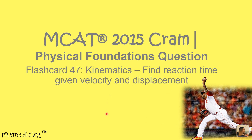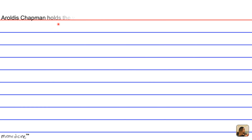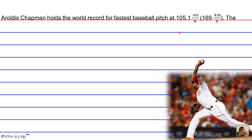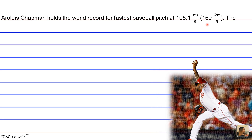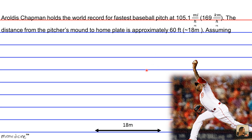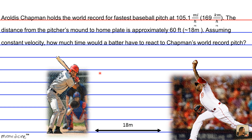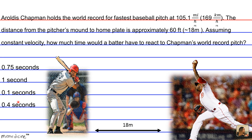Alright, let's get into the question. Aroldis Chapman holds the world record for the fastest baseball pitch at 105 miles per hour — that's 169 kilometers per hour. The distance from the pitcher's mound to home plate is approximately 60 feet, which is approximately 18 meters. Assuming constant velocity, how much time would the batter have to react to Chapman's world record pitch? Would it be 0.75 seconds, 1 second, 0.1 seconds, or 0.4 seconds?